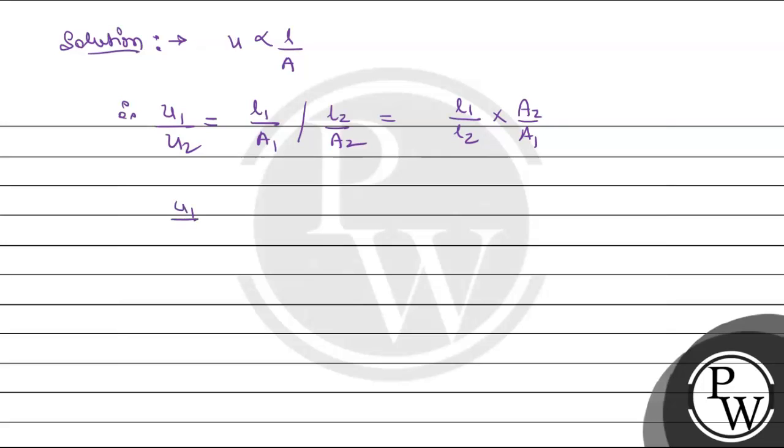So u1 upon u2 is equal to - now given that l1 is 3 times of l2, so this becomes 3 l2 upon l2. And area we calculate - since radius is twice, area becomes 4 times, that is a2 upon 4 times of a2.